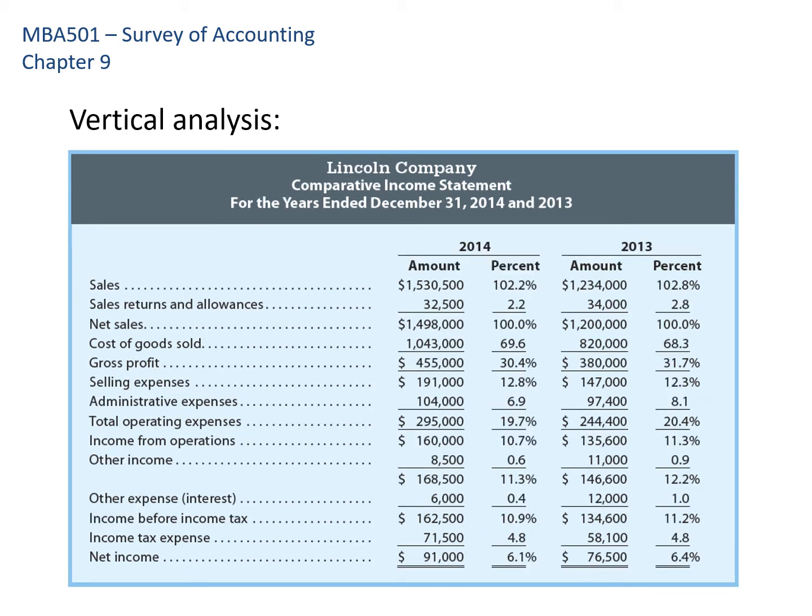Vertical analysis is similar, except we convert everything to a percentage. The company uses net sales as 100%, and everything is expressed as a percentage of that. For example, cost of goods sold at $1,043 divided by $1,498 is 69.6%, giving a gross profit of 30.4%. Each number is divided by net sales and expressed as a percentage. Looking at changes over time, I can see cost of goods sold is increasing as a percentage, and selling expenses are also increasing as a percentage.